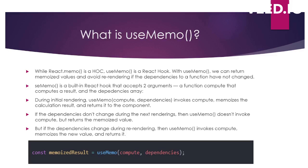You might wonder: if we already have React.memo, why do we need useMemo? The key difference is that useMemo is a hook, while React.memo is a higher order component. useMemo is dependent on a dependency array that we pass to it, whereas React.memo is dependent on the props of the component wrapped inside it. That is the major difference between the two.